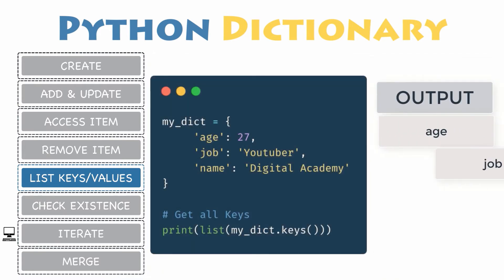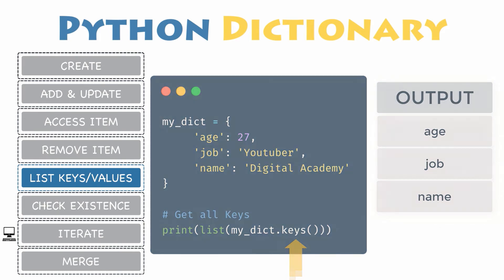Keys. This method returns an iterable object containing the list of all the keys present inside the dictionary.